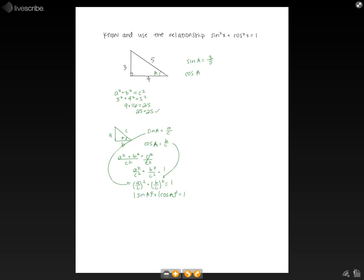And if we have our cosine of A, we know that's our adjacent over the hypotenuse, which is 4 over 5.